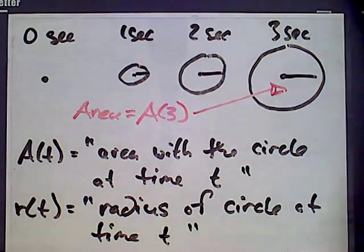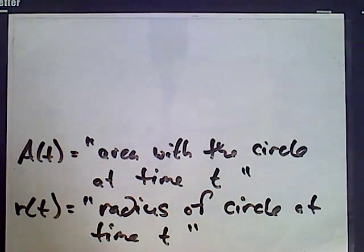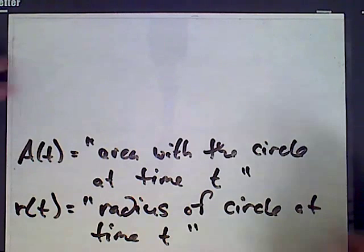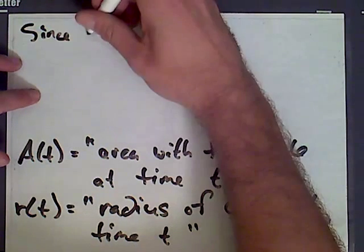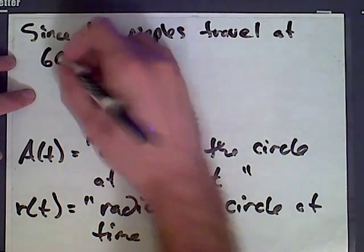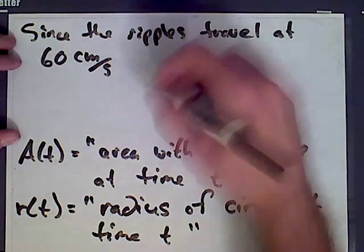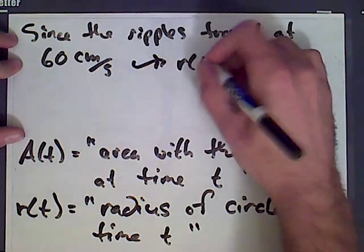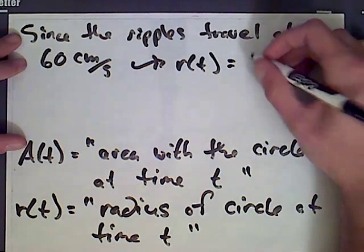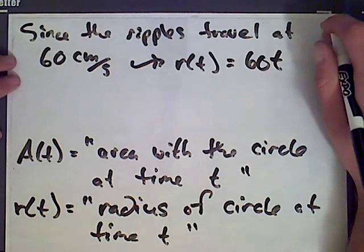Now I'm going to erase this picture. What do we know about the radius at time t? Well, they give us this information that the ripples are traveling outward at a speed of 60 centimeters per second. Since the ripples travel at 60 centimeters per second, this is talking about how quickly the radius is traveling. We know from this that r(t) is going to be 60 centimeters per second times however many seconds we have since the stone's been dropped. So that's the radius at time t.